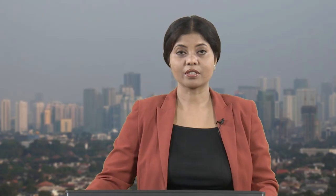Today our coverage would include: what the Industrial Revolution was, its geographical spread, the historical overview, phase-wise technology interventions and innovations, what the different innovations were and their impact, how industries were growing, what was happening with city development and housing needs, and what kind of socio-economic lifestyle was evolving. We will also see Utopianism and planning which came up following this period.